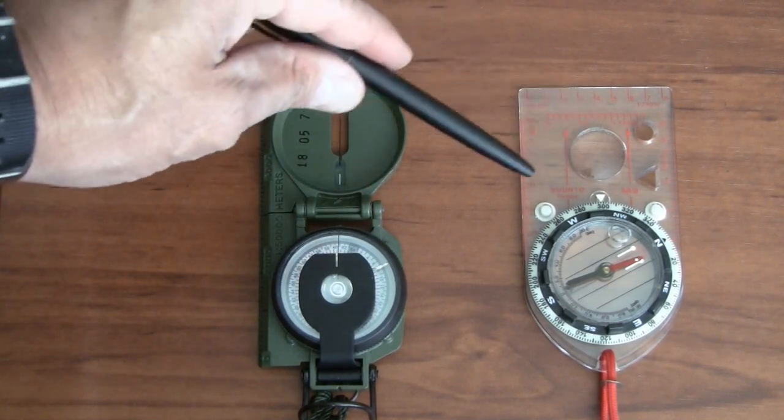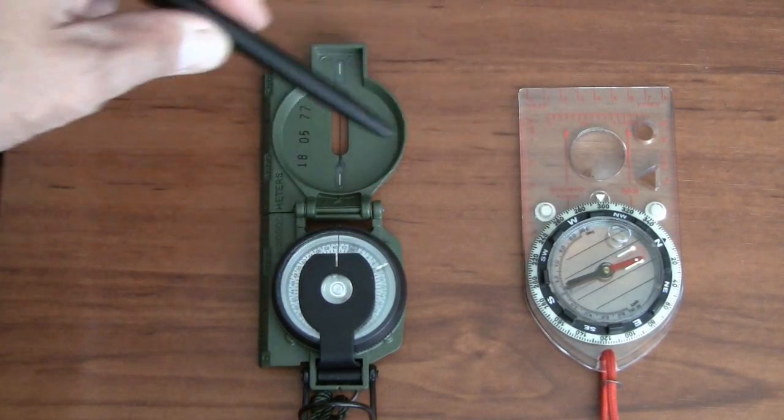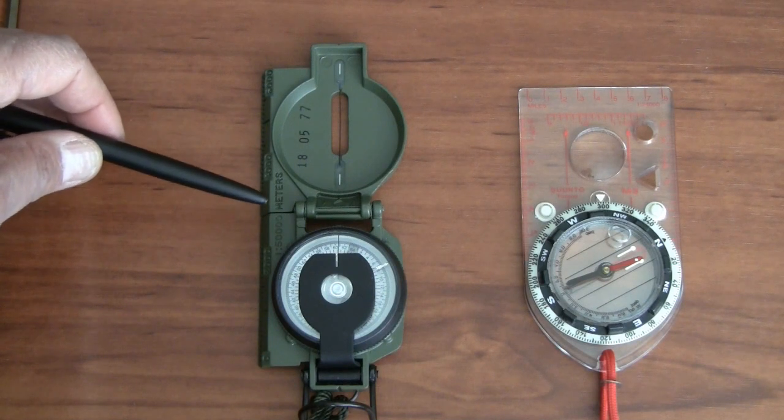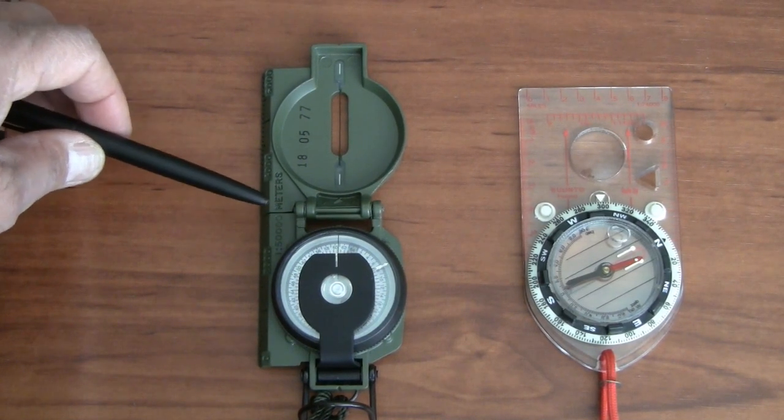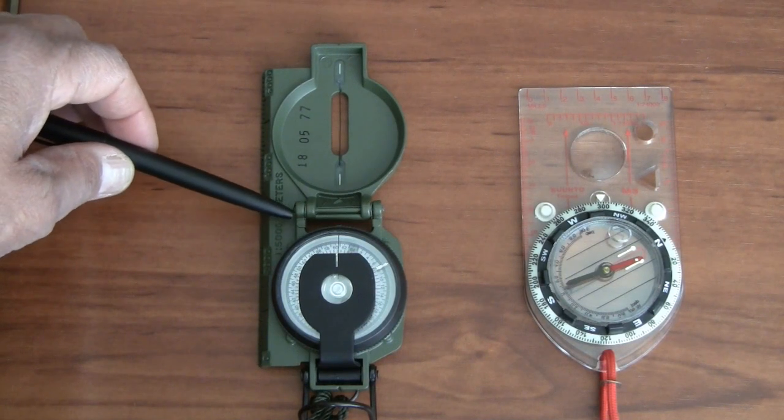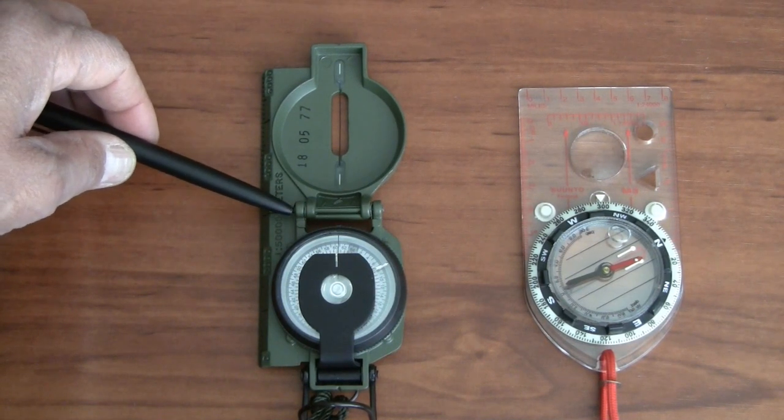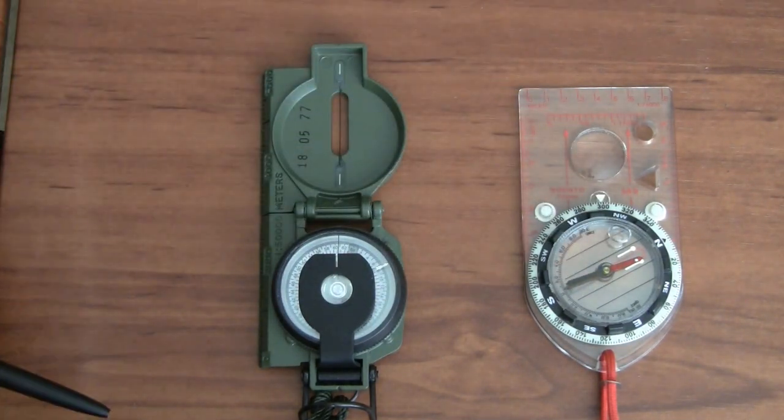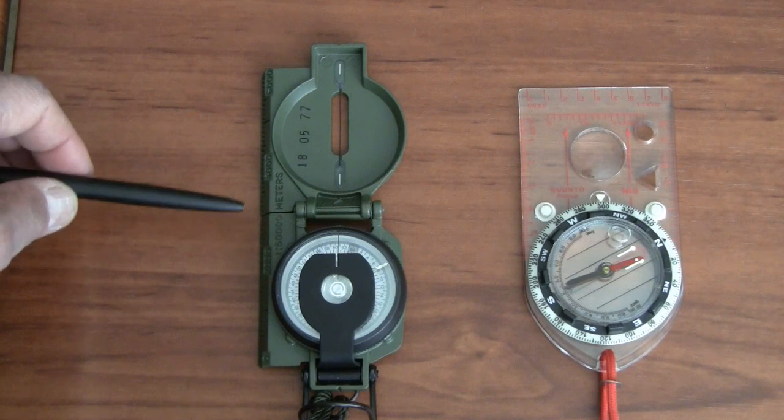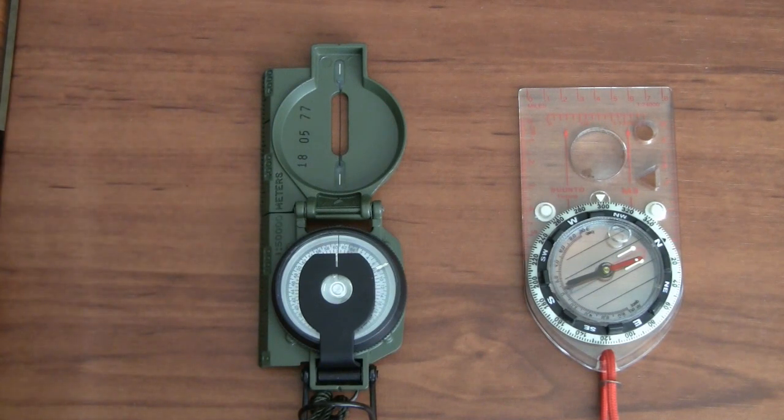The Suunto, this is an M3, and this is the Cammenga tritium-based compass, lensatic compass. And this one is about 30 bucks more expensive than this version. But in my view, and from the use that I want, this is something that I have.